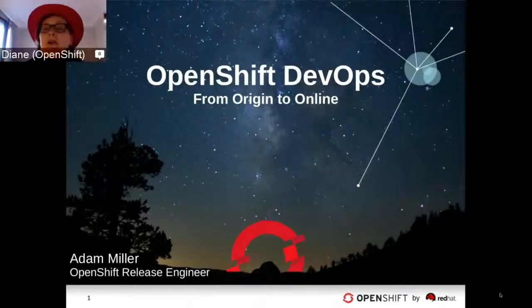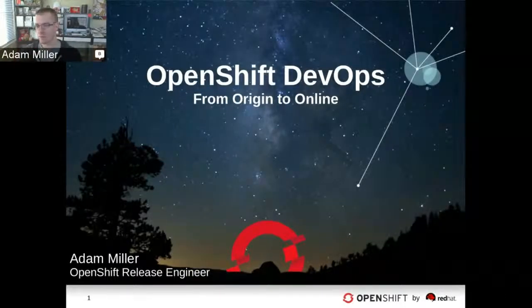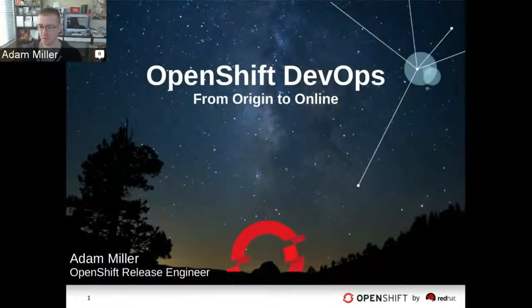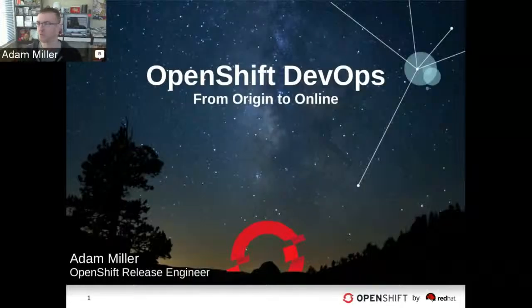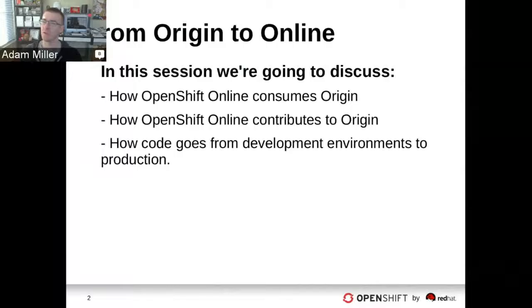So Adam, you want to take it away? With OpenShift Commons, we're very excited to be part of the community and share some of our lessons learned, and hopefully hear from others and collaborate on those kinds of things. One of the things we want to discuss is the process by which we work with developers, work with upstream, and how everything makes its way into OpenShift Online and into production. We'll cover how OpenShift Online consumes Origin, how the online team contributes to Origin, and how code goes from development environments into production.